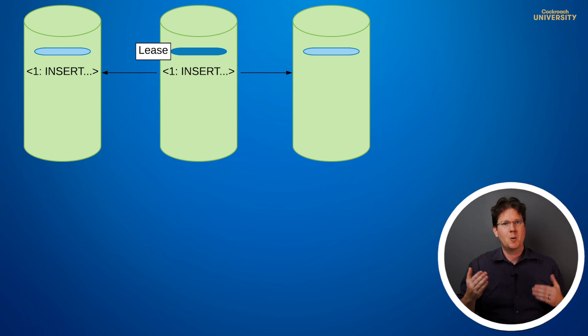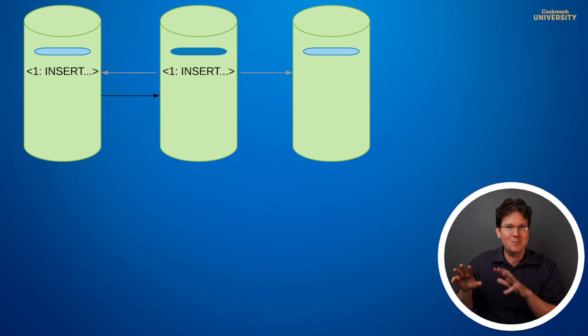Consensus has been achieved, but the leader doesn't know that yet, so the follower acks to let it know. At this point, the leader knows the Raft command was replicated, so it can commit the write and notify the leaseholder to begin showing it to readers.